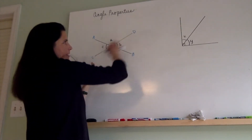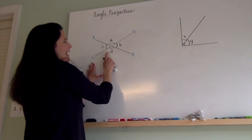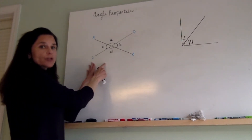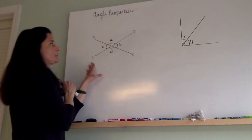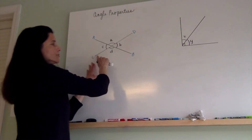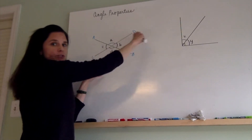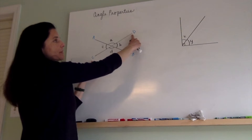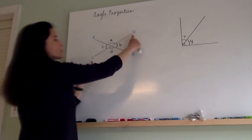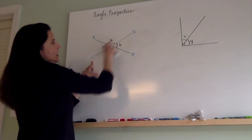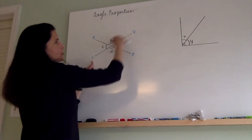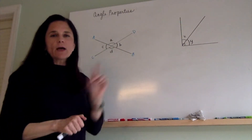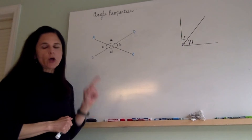Similarly, if you take the straight line CD, angle D and angle B are two angles on that straight line, so their total would be 180 degrees. And then the angles on the other side of the straight line — angle C and angle A along the straight line CD — would also be 180 degrees. So that was the first angle property that we learned. Hopefully you remember.